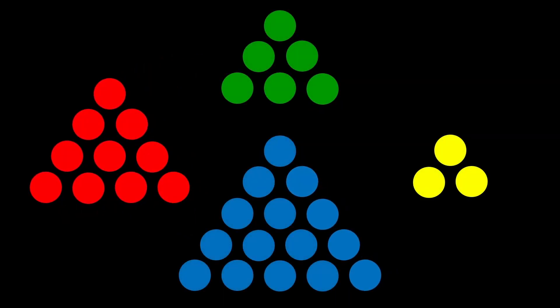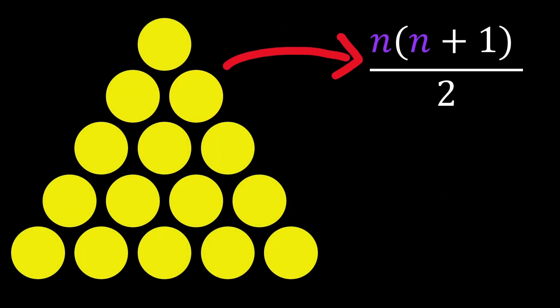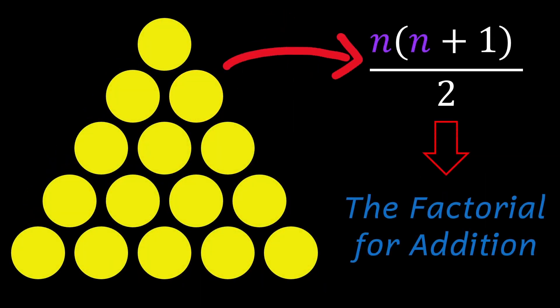This is a triangle made of dots. While it may not seem too remarkable, the patterns within it and all other triangles like it hold secrets of addition. Today I'm going to show you those patterns, how they relate to this formula, and why they create something called the factorial for addition.